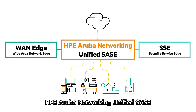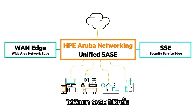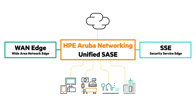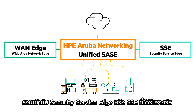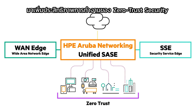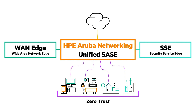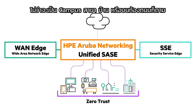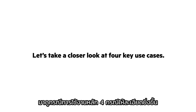HPE Aruba Networking Unified SASE takes SASE to the next level, bringing together our industry-leading SD-WAN with our award-winning Security Service Edge, or SSE, to extend zero-trust security controls to all people and devices, no matter from where they connect — whether campus, branch, home, or on the road. Let's take a closer look at four key use cases.